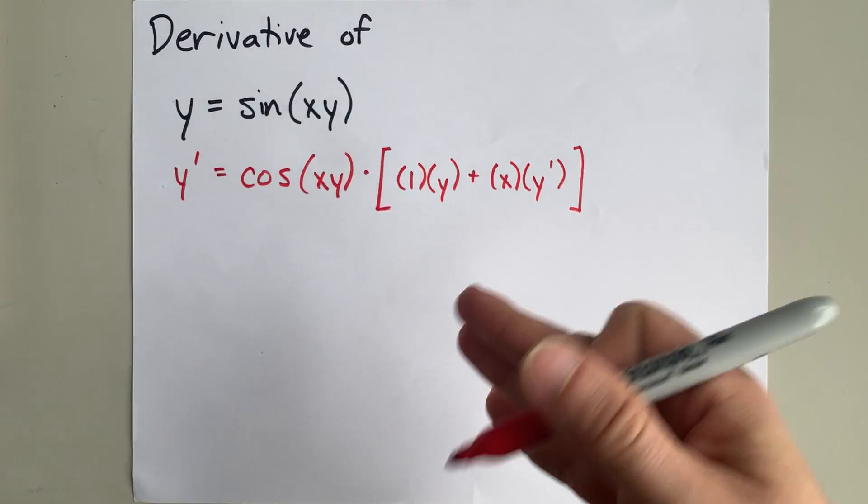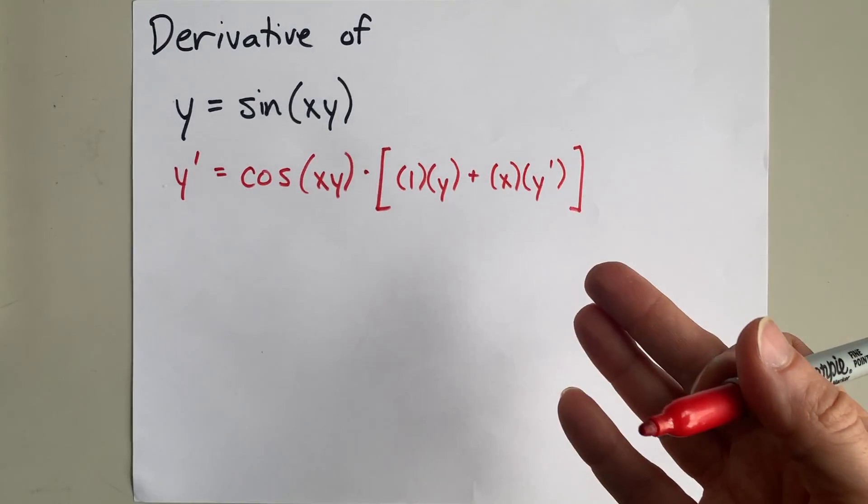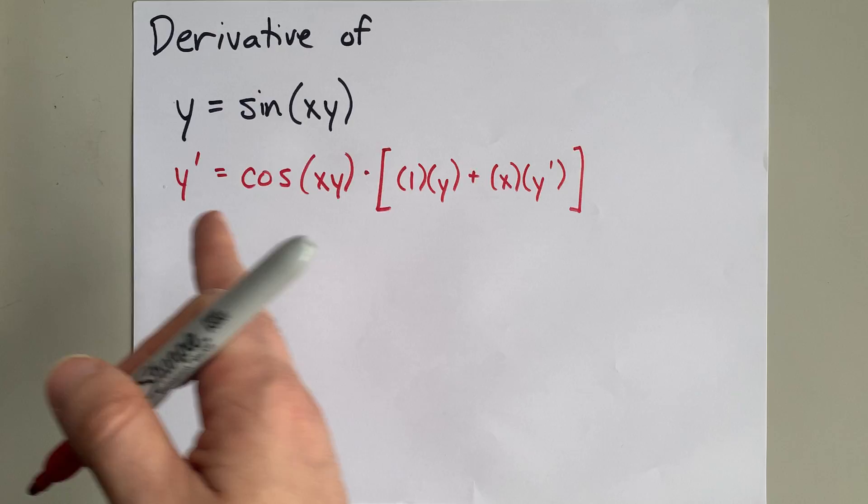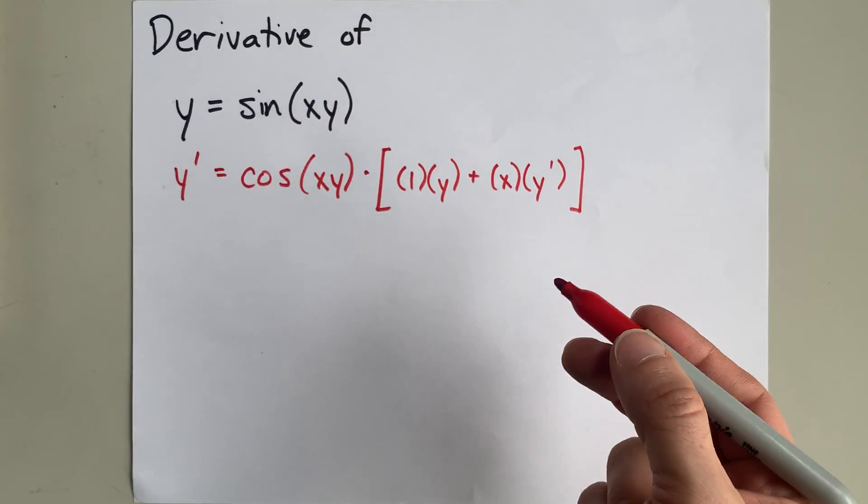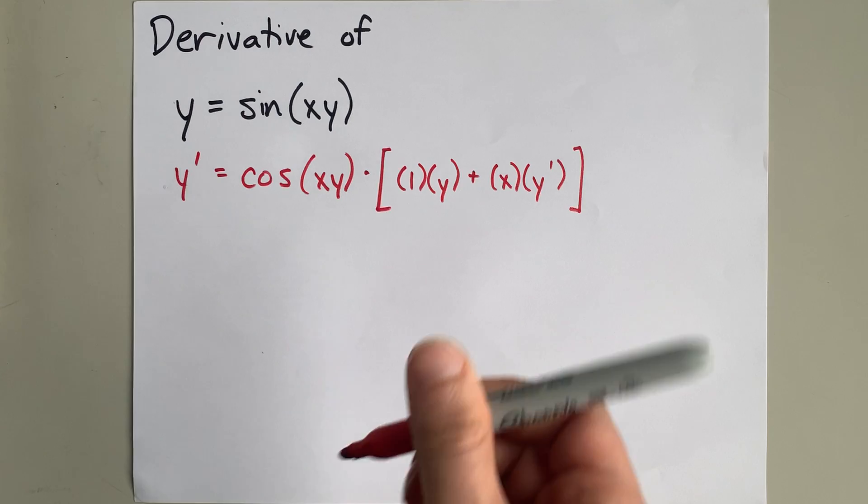So this is it. This is me taking the derivative. But ideally, we'd be able to separate y prime out and get an expression for the derivative based only on x and y.